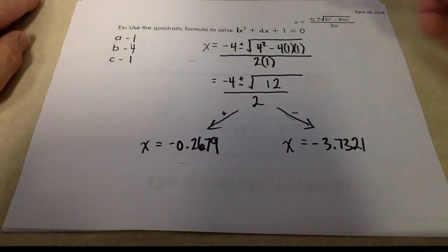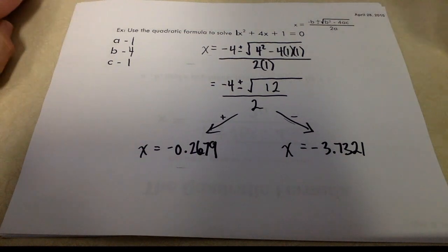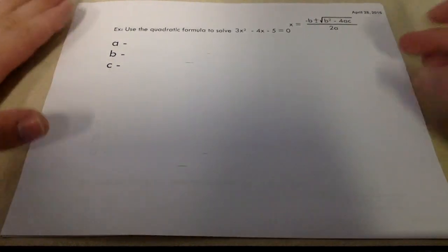So these are our x-intercepts. Two solutions. Definitely not able to factor this quadratic equation. If we tried to add to get 4, multiply to get 1, you'll quickly realize there are no such numbers. Let's take a look at another one.